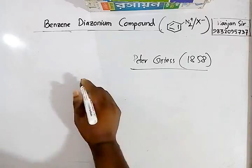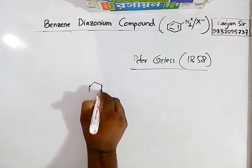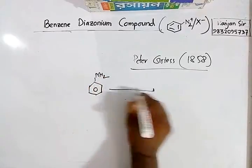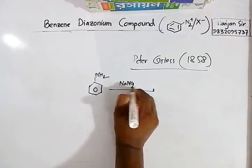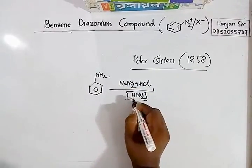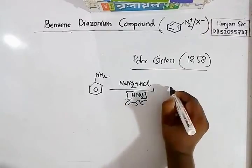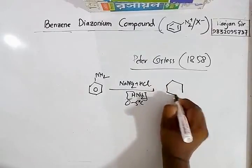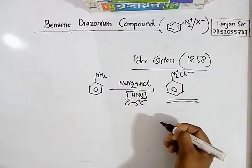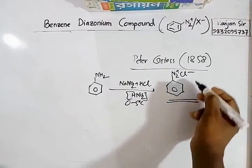Benzene diazonium compound is prepared by a reaction called diazotization. Aniline is reacted with a mixture of NaNO2 and HCl, which produces HNO2 instantly. The reaction temperature must be maintained at 0 to 5 degrees centigrade, and the product is benzene diazonium chloride.